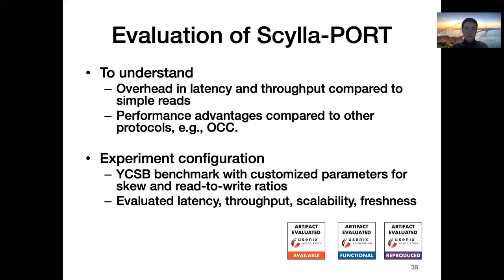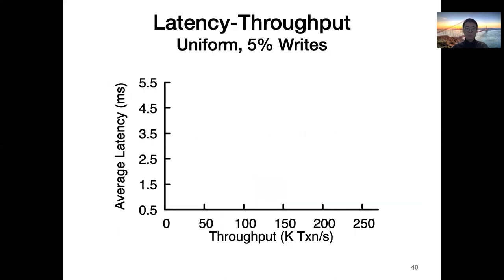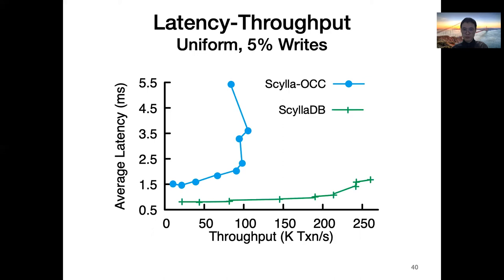We evaluated ScalaPort to understand the overhead it adds to simple reads and its performance compared to other protocols like OCC. We used the YCSB benchmark and controlled parameters for skew and the read-write ratios. We evaluated latency, throughput, scalability, and data freshness. This figure shows system throughput on the X-axis and average read latency on the Y-axis as we increase the load on the servers. Distributed OCC is widely used in real systems and is considered to have good performance under low contention. However, comparing OCC's performance to simple reads under uniform workloads with 5% writes, the performance difference is large.